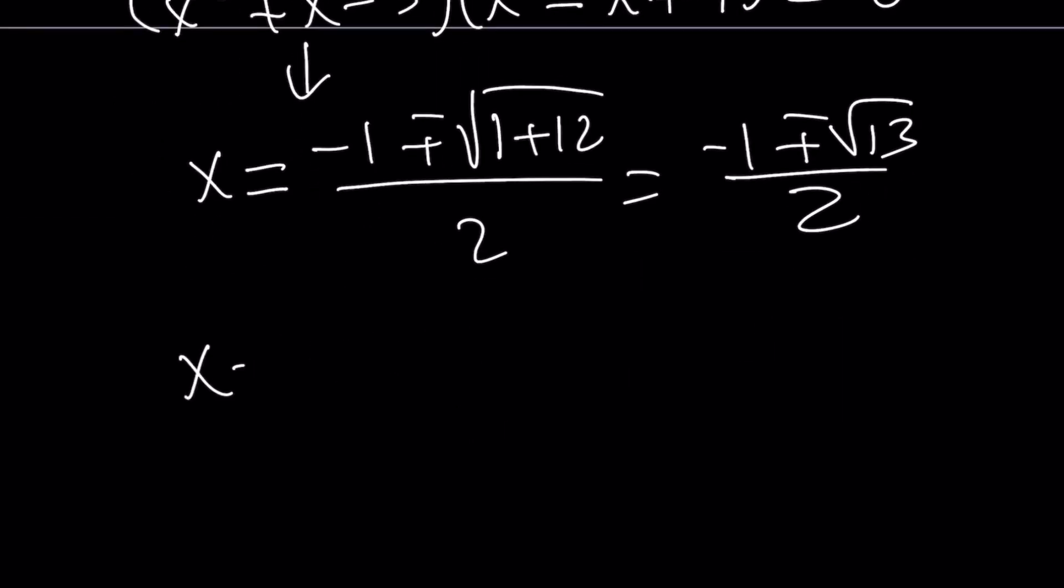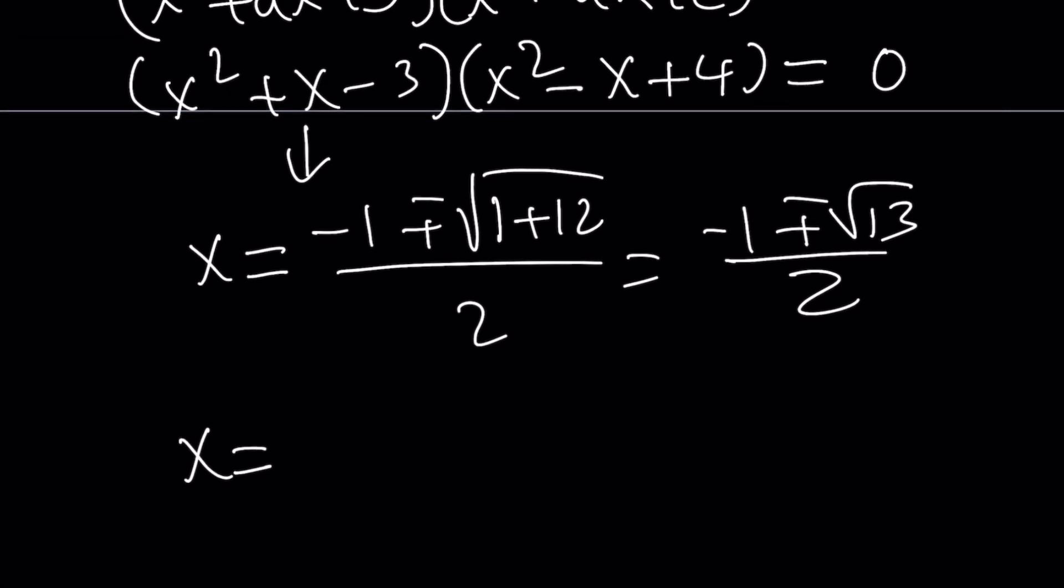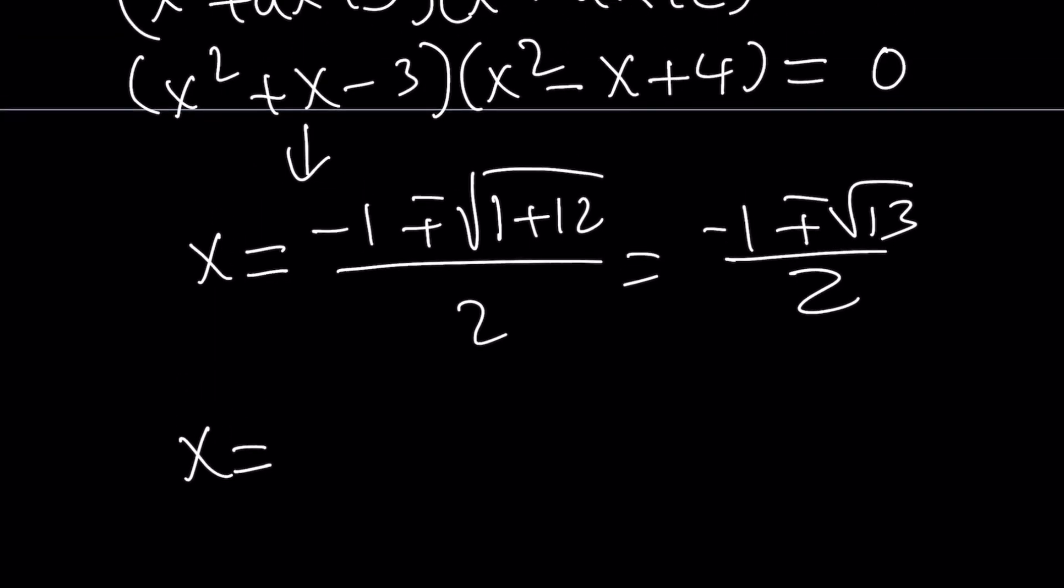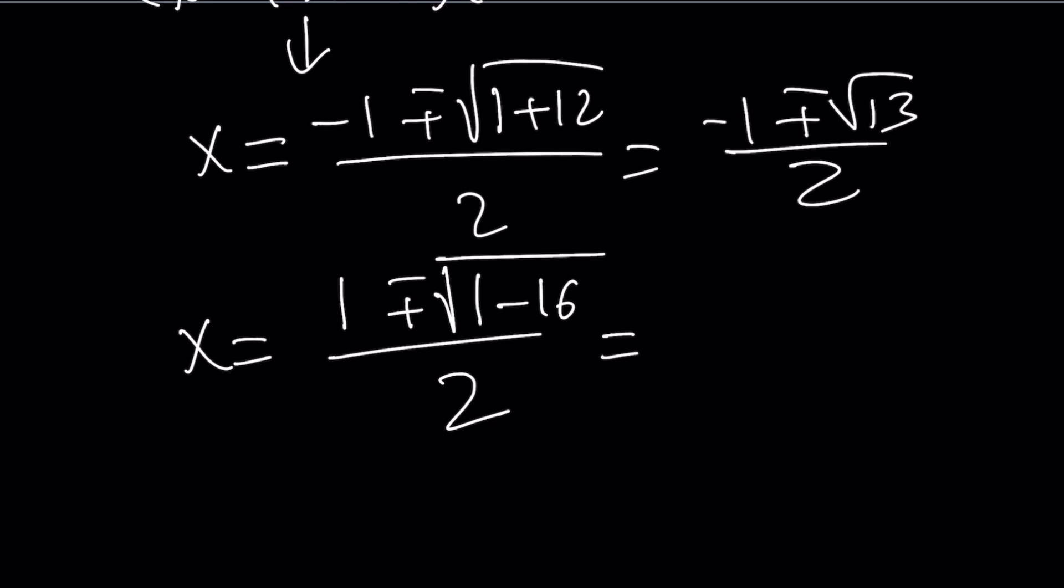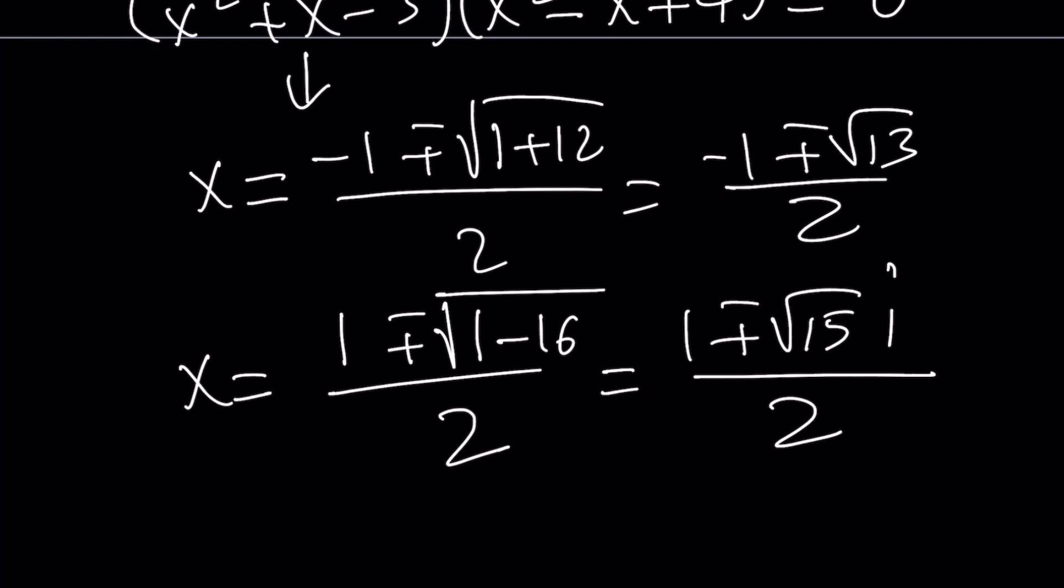And the other equation, I know some folks like complex numbers. Because the discriminant is less than 0, you get negative b plus minus the square root of b squared, which is 1, minus 4ac, which is minus 16. And that is going to give you negative 15. You can write it as 1 plus minus square root of 15i, which is the number whose square equals negative 1. And then we get all the solutions here.